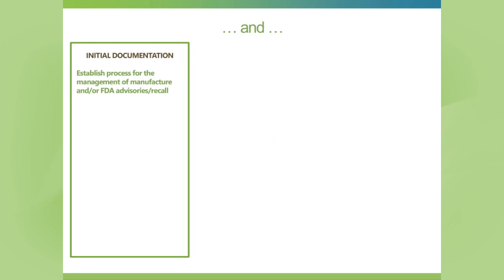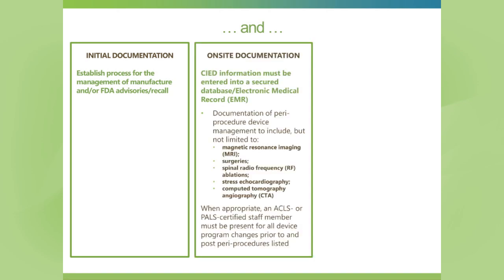In addition to initial documentation, you need to establish a process for the management of all manufacturer and FDA advisories and recalls. One of the most important things that happens in the device clinic is that if you have a recall, you have to be able to go back and find the patients that would be affected. That's one of the reasons we ask that you document the abandoned and active hardware in the patient — make, model, and serial number of each lead and device. All that data information must be entered into a secured database or electronic medical record to enable any sort of recall tracking.